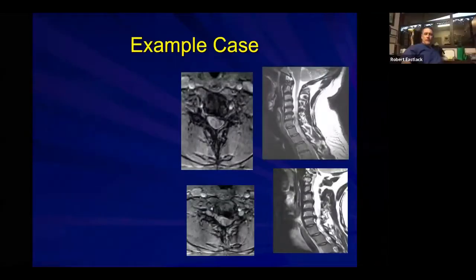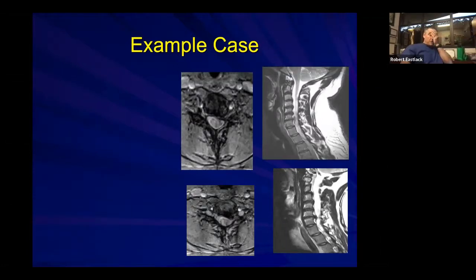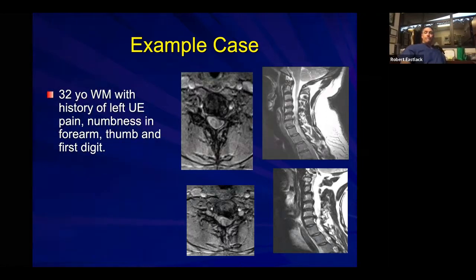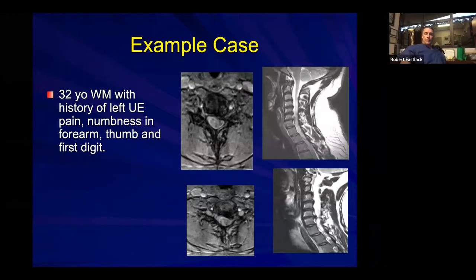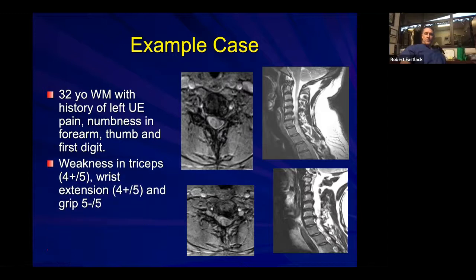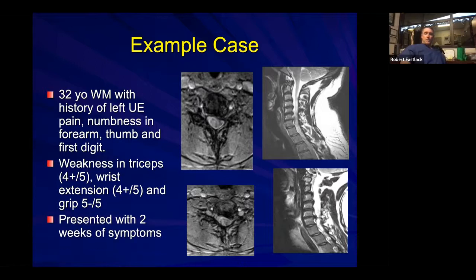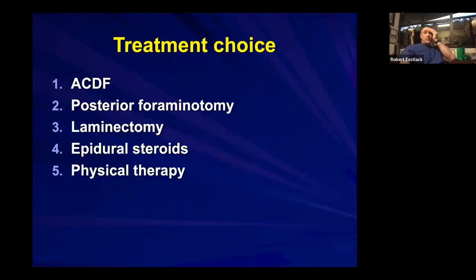To walk through cervical issues in general and cervical radiculopathy, which is why we do the vast majority of these procedures — starting with a case: a 32-year-old with left upper extremity pain, paresthesias, numbness in the C6 distribution. You can see on the MRI the disc herniation, and there is some weakness. The patient presented with just two weeks of symptoms.